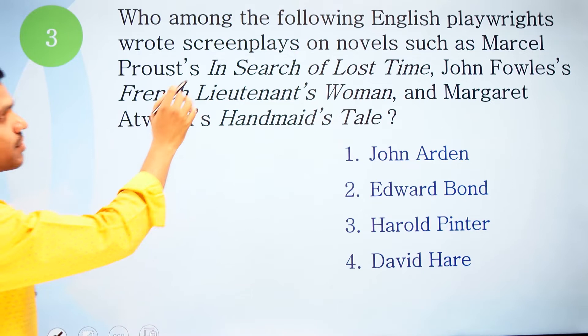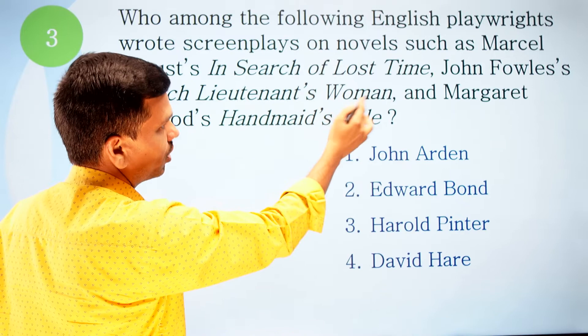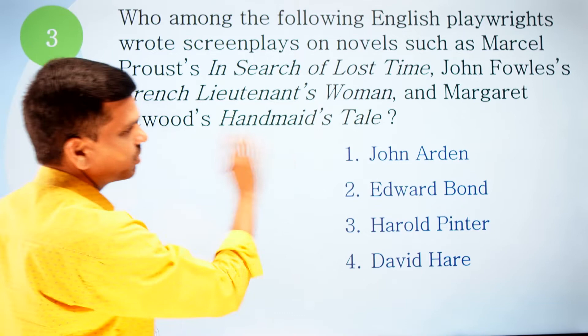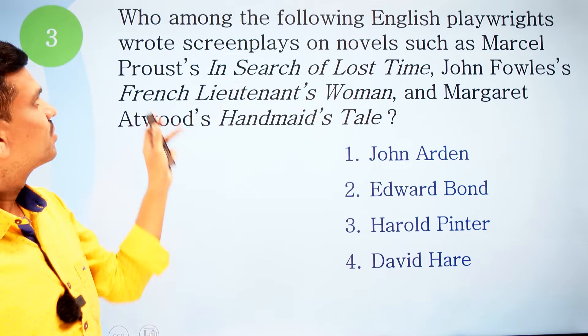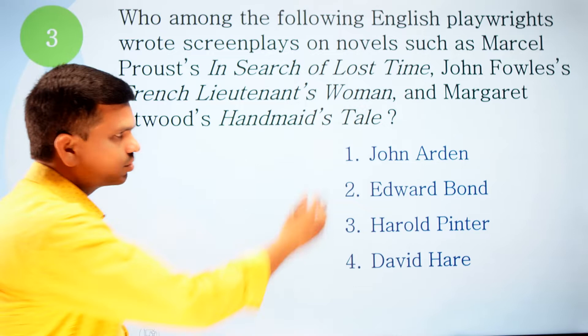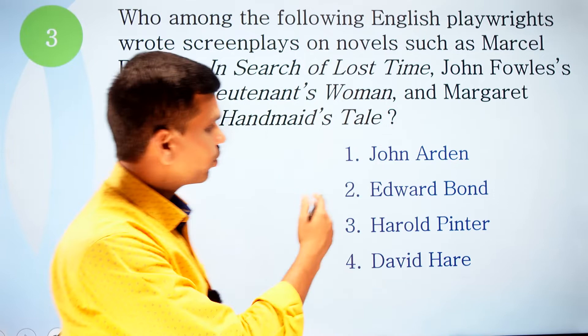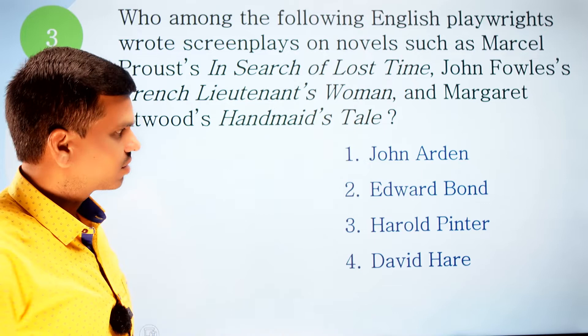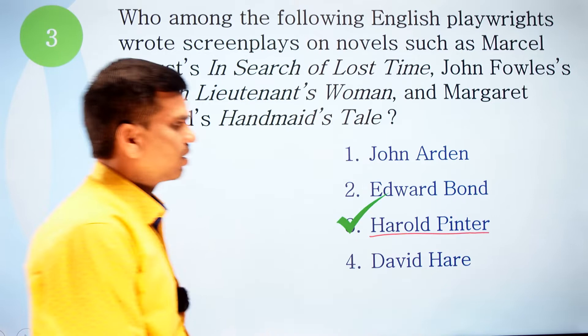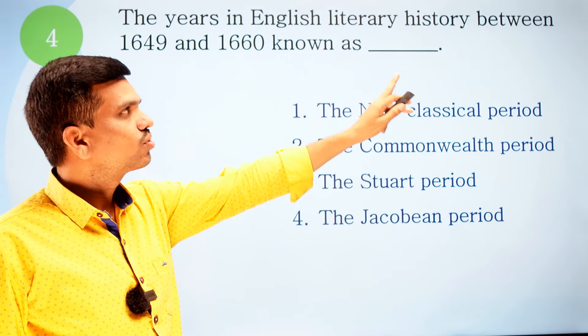Question three: Who among the following English playwrights wrote screenplays based on novels such as Marcel Proust's 'In Search of Lost Time,' John Fowles' 'The French Lieutenant's Woman,' and Margaret Atwood's 'The Handmaid's Tale'? The four options are: one, John Arden; two, Edward Bond; three, Harold Pinter; and four, David Hare. The correct option is number three, Harold Pinter.